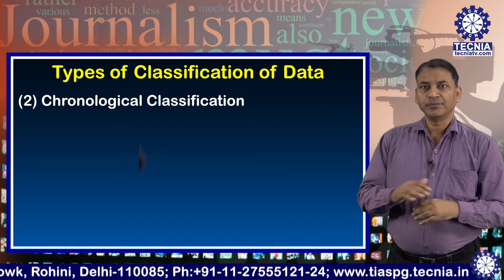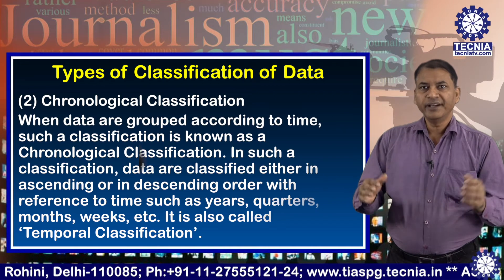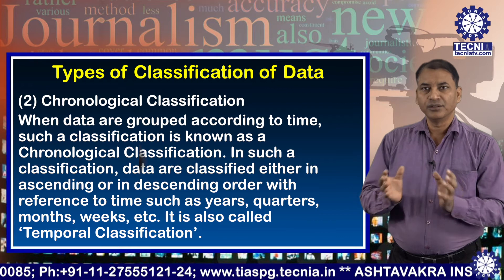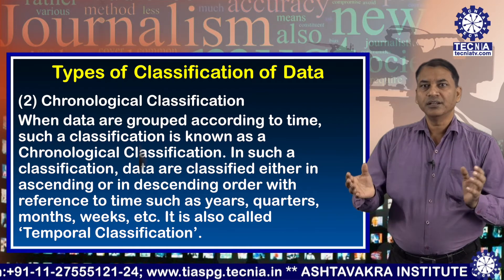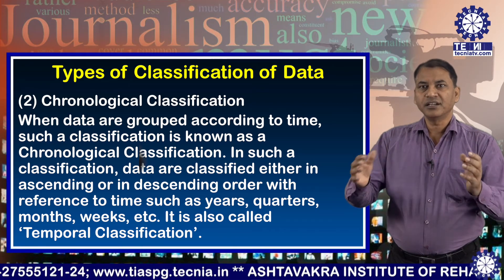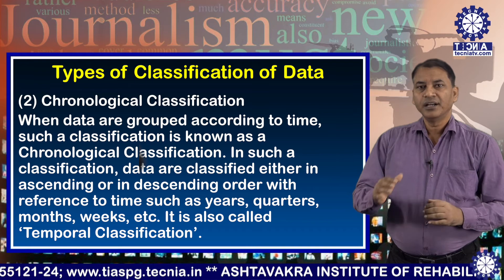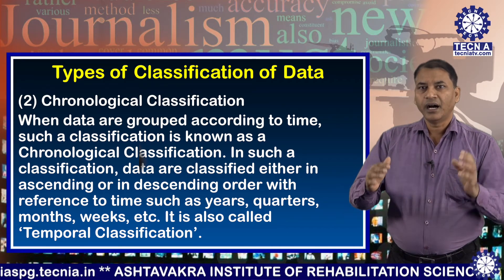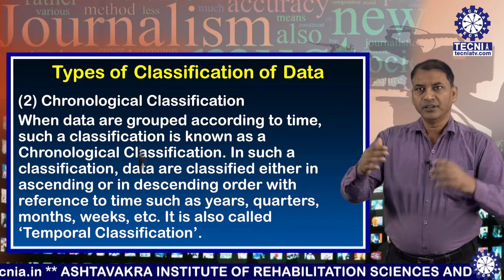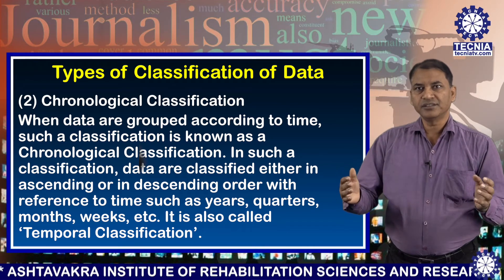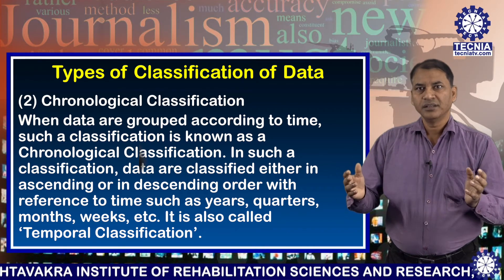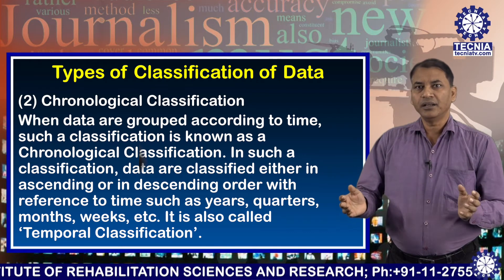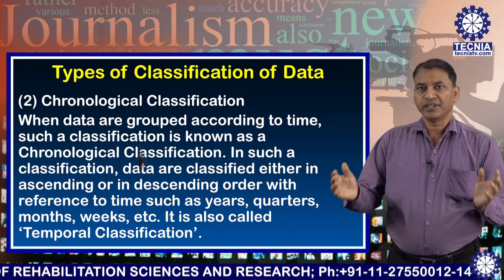Number two: chronological classification. When data are grouped according to time, such classification is known as chronological classification. In such a classification, data are classified either in ascending or descending order with reference to time, such as years, quarters, months, weeks, etc. It is also called temporal classification.